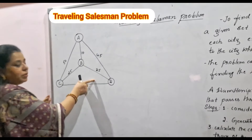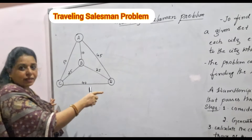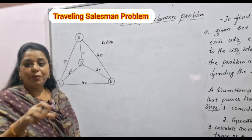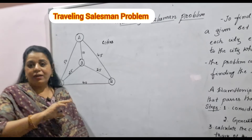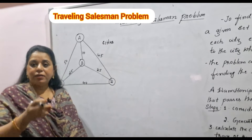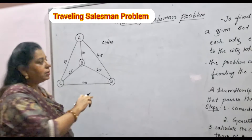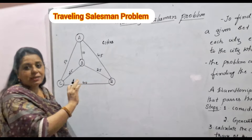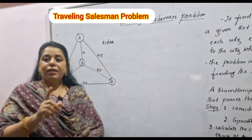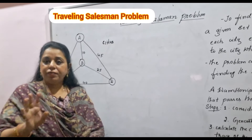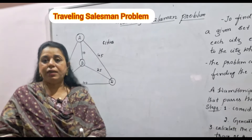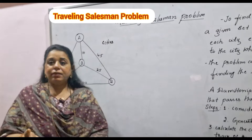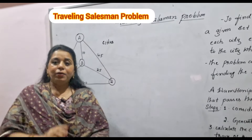The Traveling Salesman Problem can be modeled by a weighted graph. In this graph, the vertices represent cities — we use cities to relate it to the traveling salesman problem. There is a salesperson who travels from one city to another, with the condition that he must return to the city where he started. There are four cities here: A, B, C, and D. If he starts from city A, he must visit all cities and return to A, finding the shortest possible route.